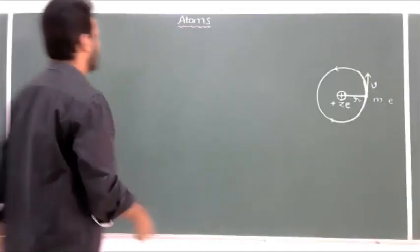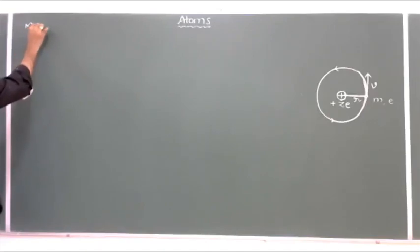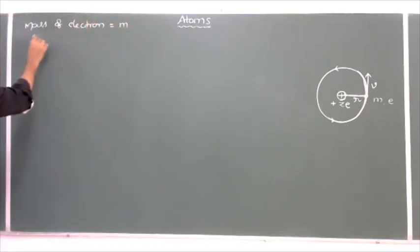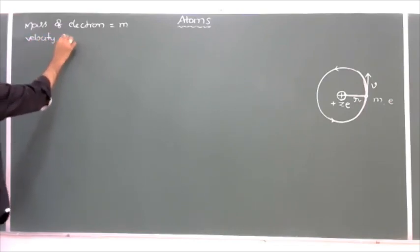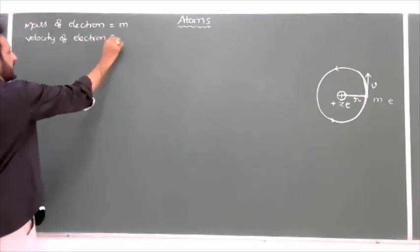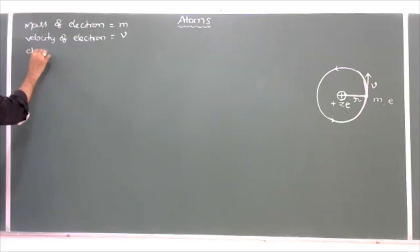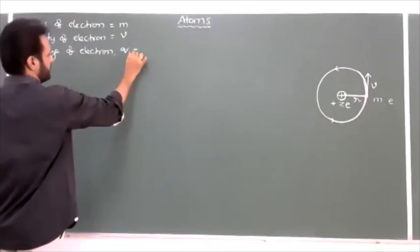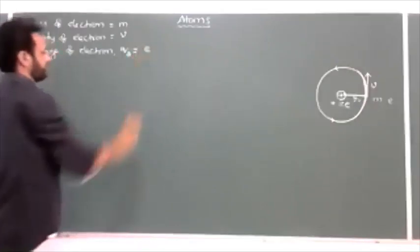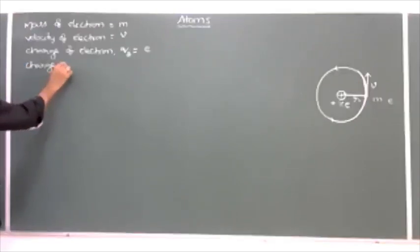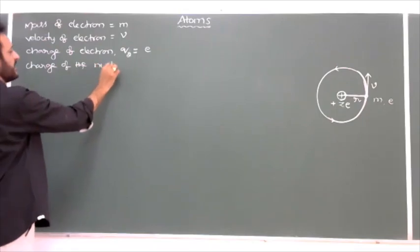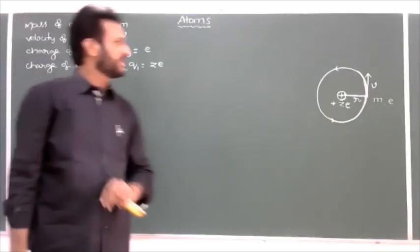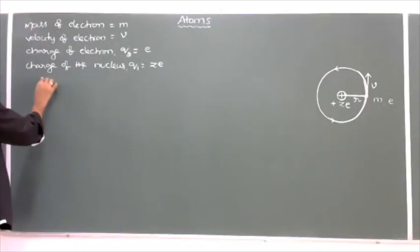Centripetal force — any electron revolving in a circular orbit requires centripetal force, which is provided by the electrostatic force between the nucleus and electron. That is also given by Rutherford's model. Now I will write the variables: mass of electron is equal to m, velocity of electron or speed of electron is equal to v, charge of electron q₂ is equal to e, and charge of the given nucleus q₁ is equal to Ze.